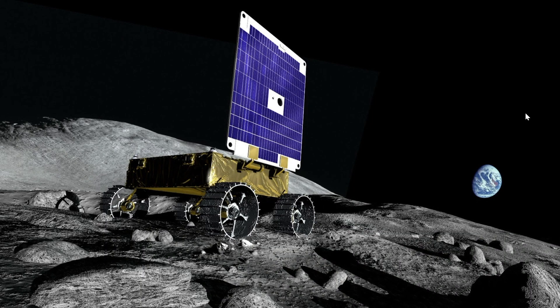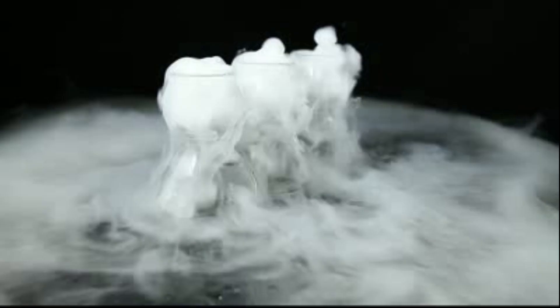Moonranger is a micro rover for exploring ice at the pole of the moon. Future human explorers will drink the water, breathe its oxygen, and grow food with it.